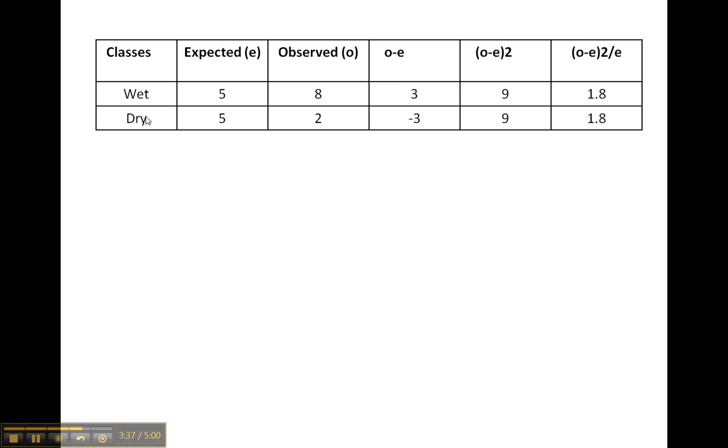There are two classes, wet and dry. And if we were to expect that there's no choice, in other words, they are just randomly moving the pill bugs and that they are moving wherever they wander, then one would expect that there would be five on one side and five on the other side at the end.